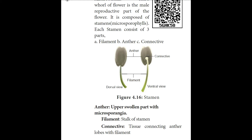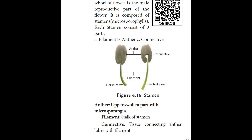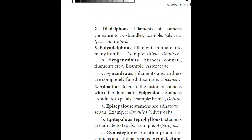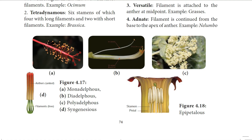Connation — fusion of stamens among themselves — is divided into three types: Adelphous, Syngenesious, and Synandrous. In Adelphous, the filaments connate into one or more bundles but the anthers remain free. It is further classified into Monadelphous (filaments connate into a single bundle — example: Malvaceae/Hibiscus), Diadelphous (filaments connate into two bundles — example: Fabaceae, pea, Clitoria), and Polyadelphous (filaments connate into many bundles — example: Citrus and Bombax).